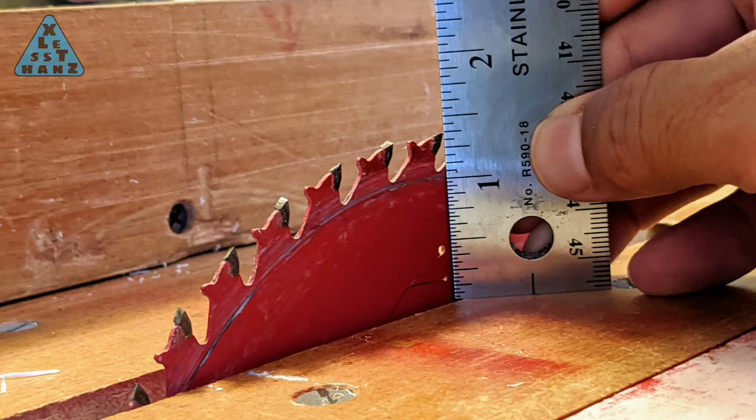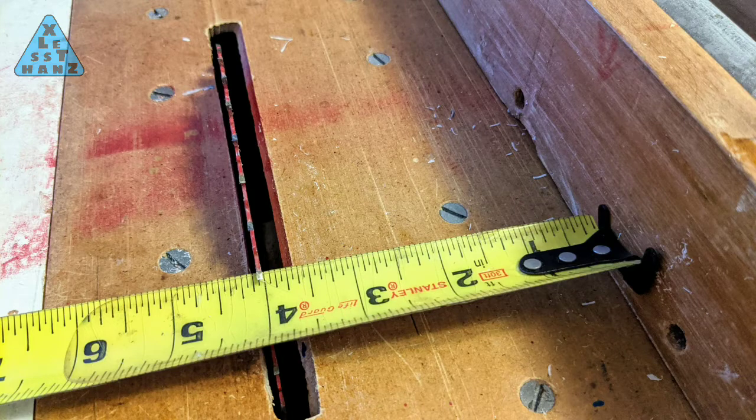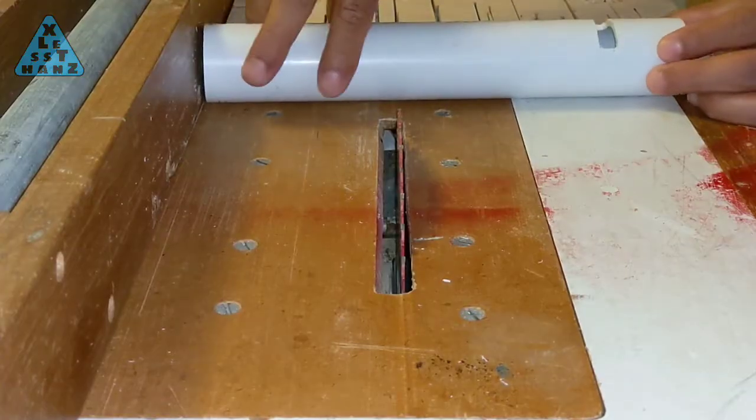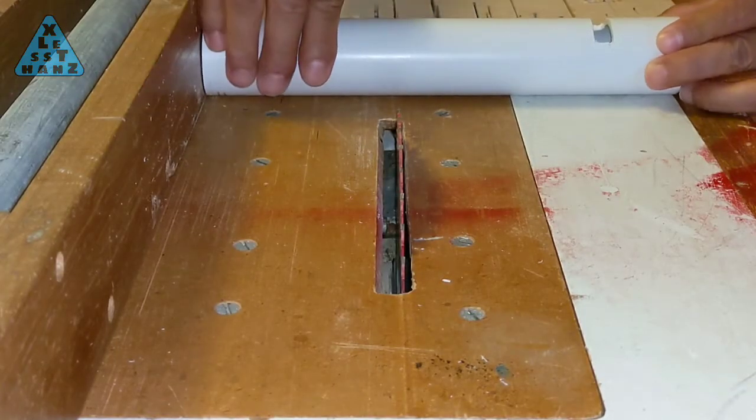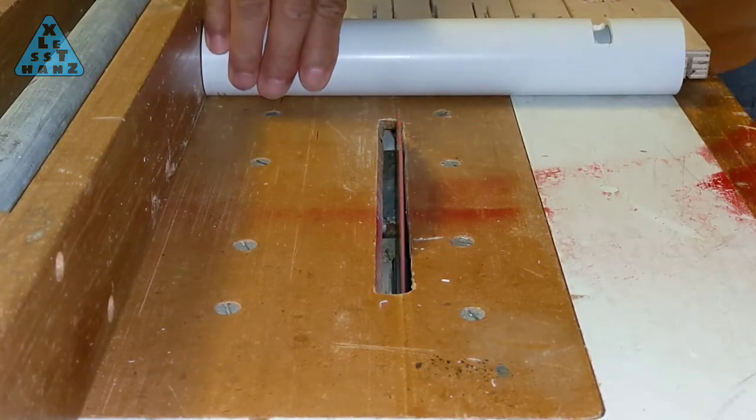Raise the table saw blade one and three-eighths inch, then cut along the width of the sleeve four inches from the end opposite of the previous slotted cut and also on the exact opposite facing side of that cut. I know that sounded a little complicated, so if you didn't get that, just watch the video.